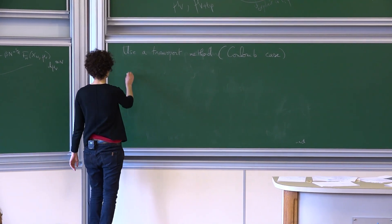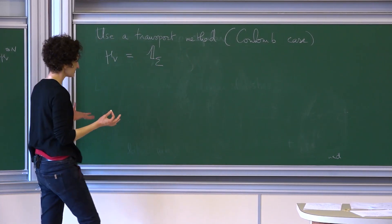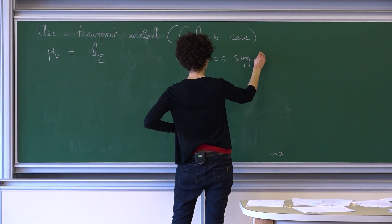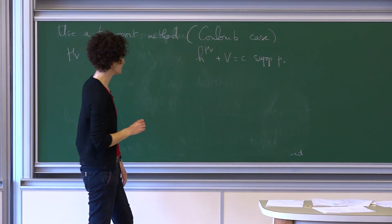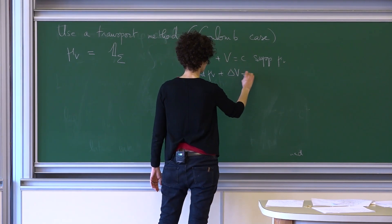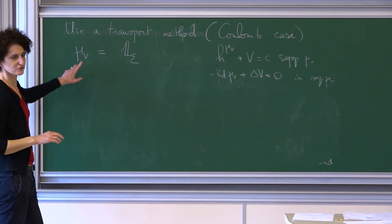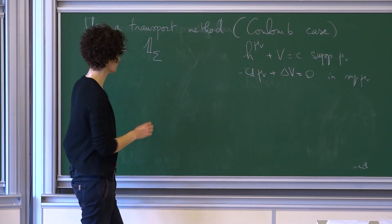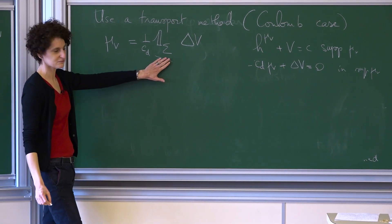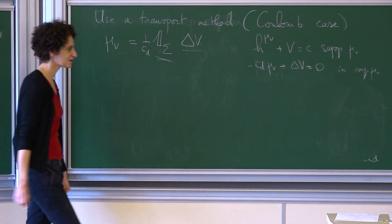What's nice about the Coulomb case is that the equilibrium measure is relatively explicit, at least in its support. There is some set sigma where it's supported. You can compute: since H_mu_V + V is constant in the support of mu_V, taking the Laplacian gives that -C_d * mu_V + Laplacian(V) = 0 in the support. So in particular, the density of mu_V in its support is just Laplacian(V)/C_d. The part that's unknown is really this set — it's given implicitly as a solution of a free boundary problem.